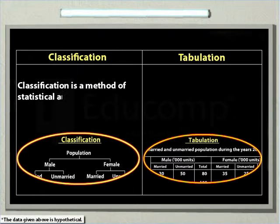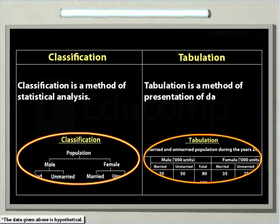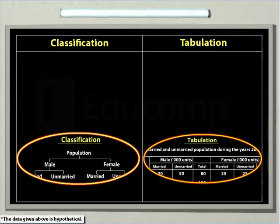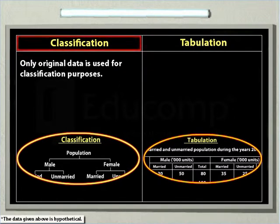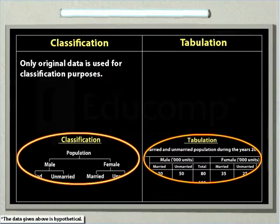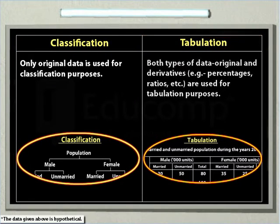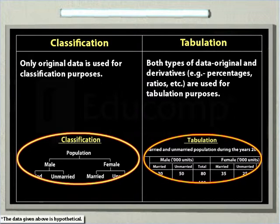Classification is a method of statistical analysis whereas tabulation is a method of presentation of data. In the process of classification, original data is used. In tabulation, however, both types of data — original and derivatives — are used.